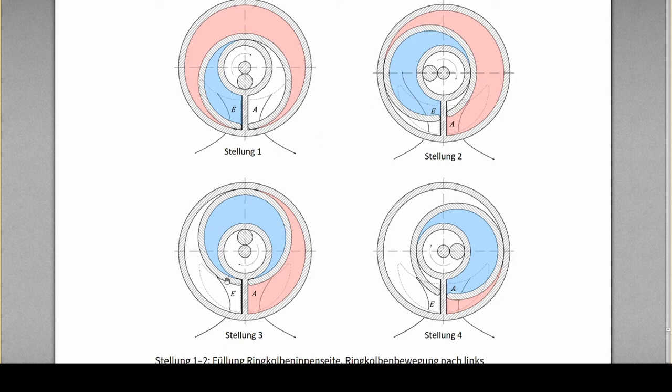And then at some point in time, the wobbling disk, notation disk, is covering, is sealing the entrance from this volume. So now it's a defined volume. And this will then be pushed to the output. So with every turn, I push the blue part to the output.